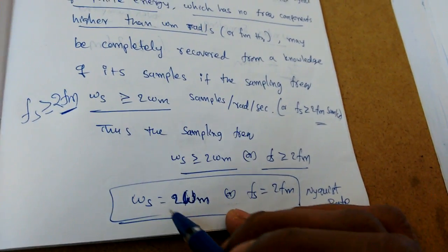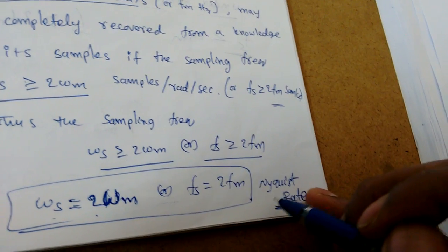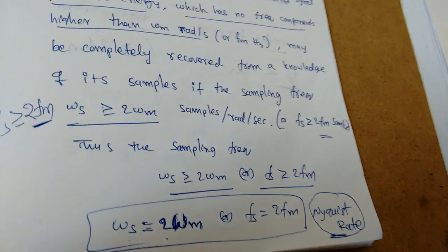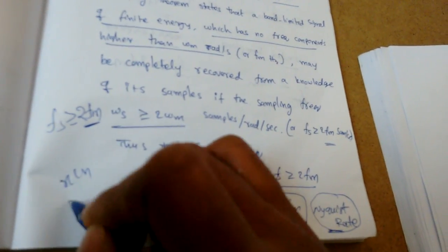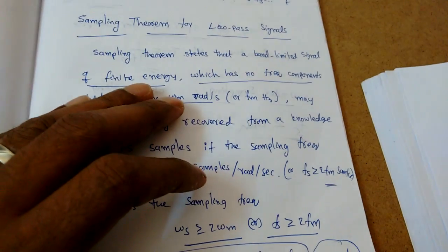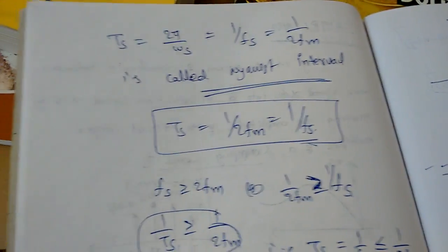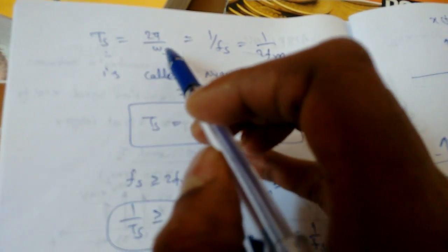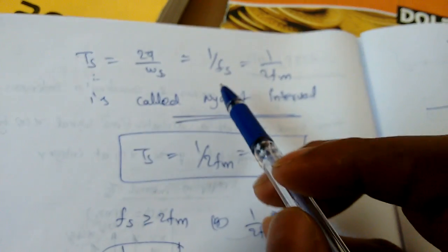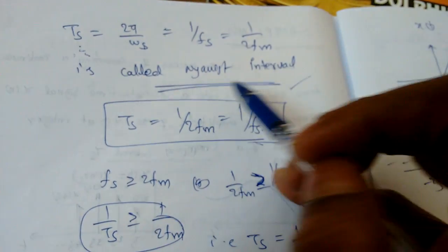This minimum sampling rate — where omega_s equals 2*omega_m, or fs equals 2*fm — is called the Nyquist rate. In gate questions they will give an equation, x(n) or x(t), and ask you to find the Nyquist rate, the sampling time, or the sampling frequency. Sometimes they will ask: given omega_s, what is the sampling time interval? Ts = 2π/omega_s, which equals 1/fs or 1/(2*fm). This is called the Nyquist interval.